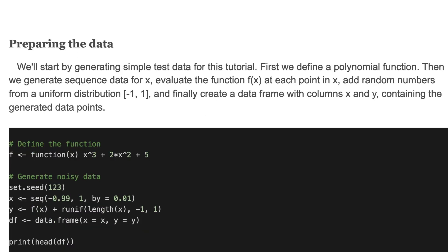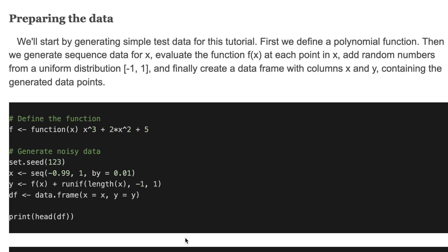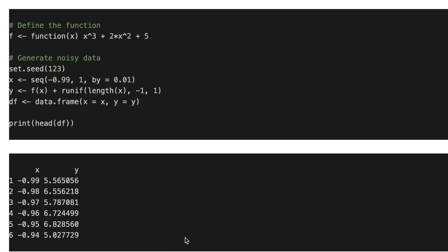We'll start by generating simple test data for this tutorial. First, we define a polynomial function. Then, we'll generate sequence data for x, call the function f(x) at each point in x, and add random numbers from a uniform distribution minus 1 to 1. Finally, we create a data frame with columns x and y containing the generated data. Here is the content of the DF data frame.